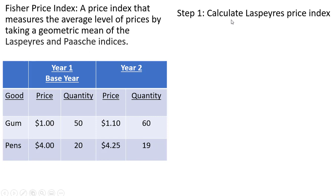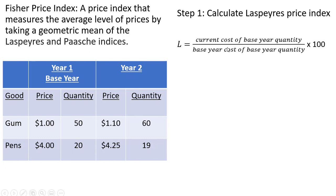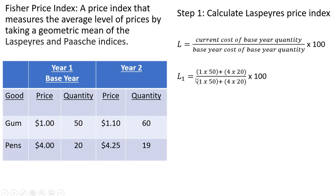So we're going to calculate the Laspeyres Price Index first, which is the current cost of the base year quantity divided by the base year cost of the base year quantity. Our base year quantity is 50 units for gum and 20 units for pens. So the current cost in year one is $1 times 50 plus $4 times 20.